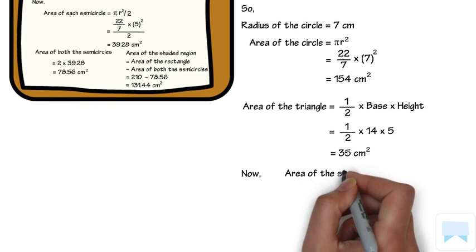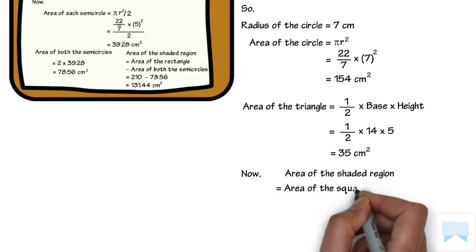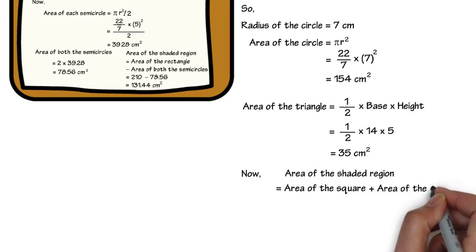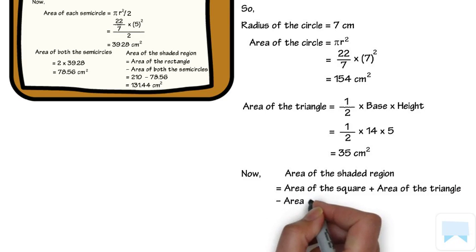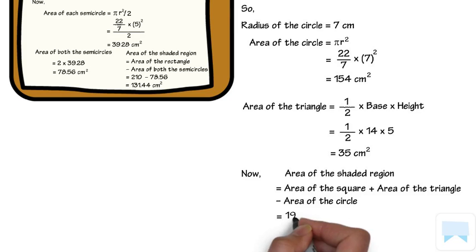Now, area of the shaded region is equal to area of the square plus area of the triangle minus area of the circle, which is 196 plus 35 minus 154, equal to 77 cm².